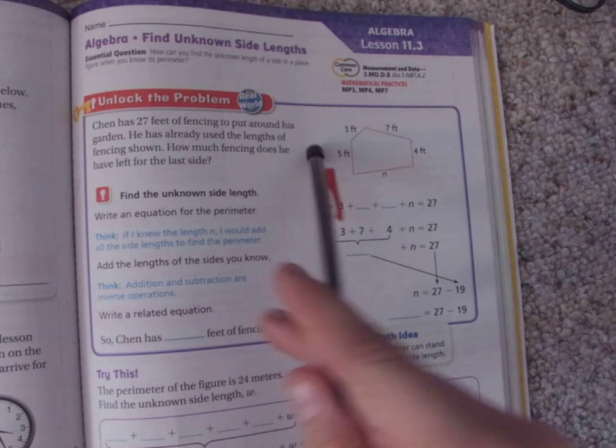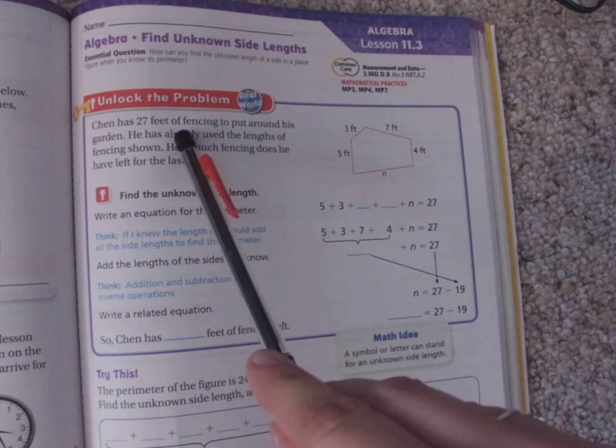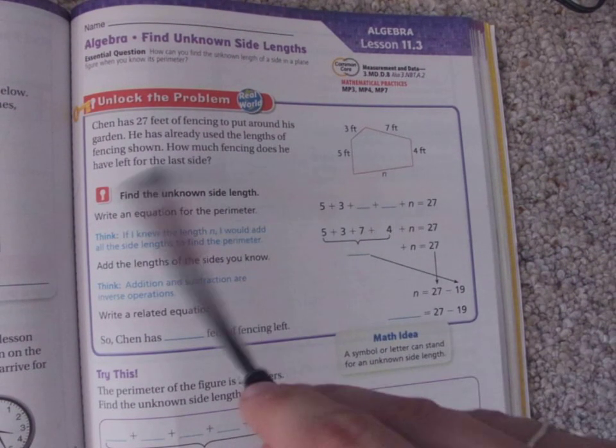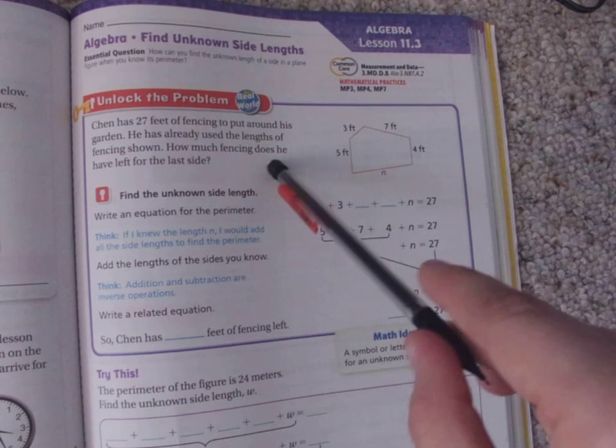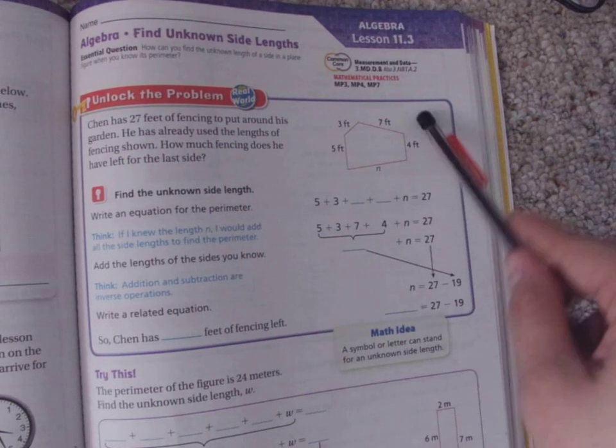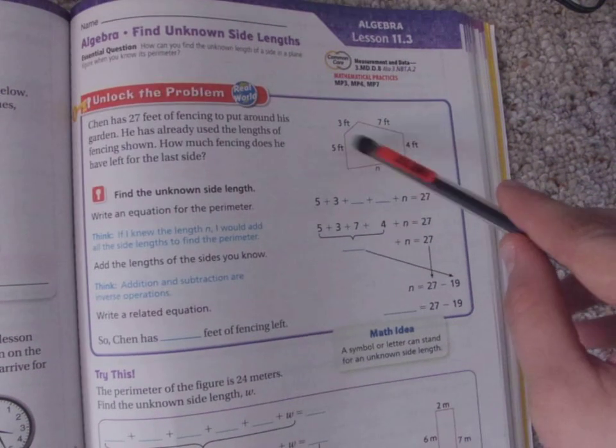So here's the problem. Chen has 27 feet of fencing to put around his garden. He has already used the lengths of the fencing shown. How much fencing does he have left for the last side?